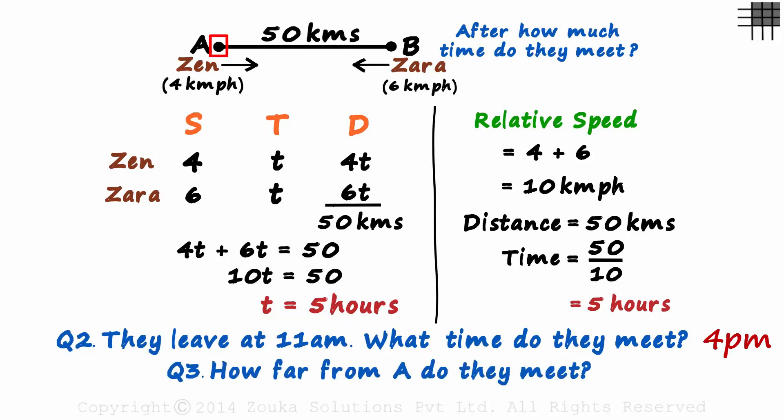How far from point A do they meet? If they meet at say this point, then what does this distance tell us? It is the distance that Zen travels. That's 4 times T or 20 kilometers. That's how far the meeting point is from A.